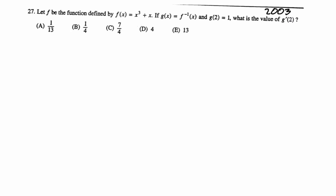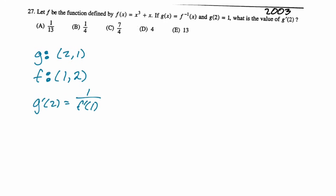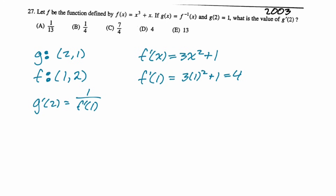Let's look at another one — basically the same thing. This is from 2003. f of x is x cubed plus x, g of x is f inverse, g of two is one — what is the value of g prime of two? Same process: g of x has the point two, one, so f of x has the point one, two. g prime of two is one over f prime of one. f prime is 3x squared plus one, so plugging in one gives us three plus one, so four. Our answer is one fourth — that would be b.